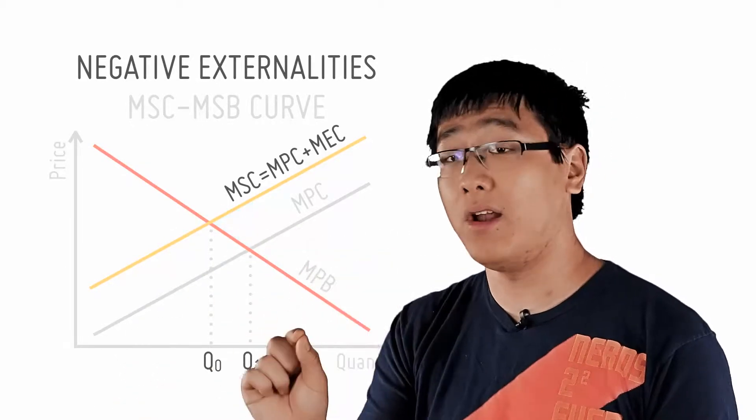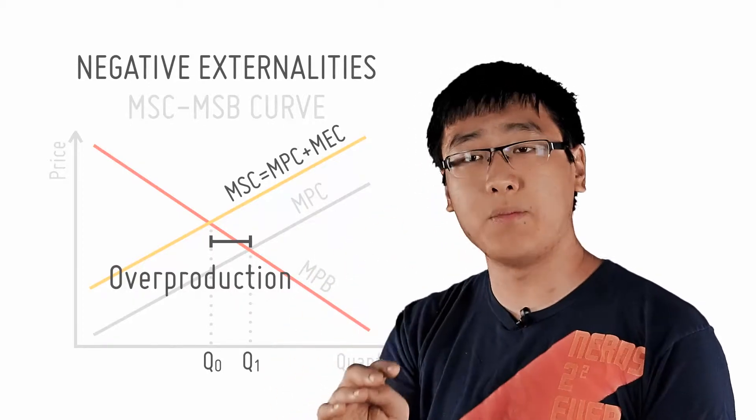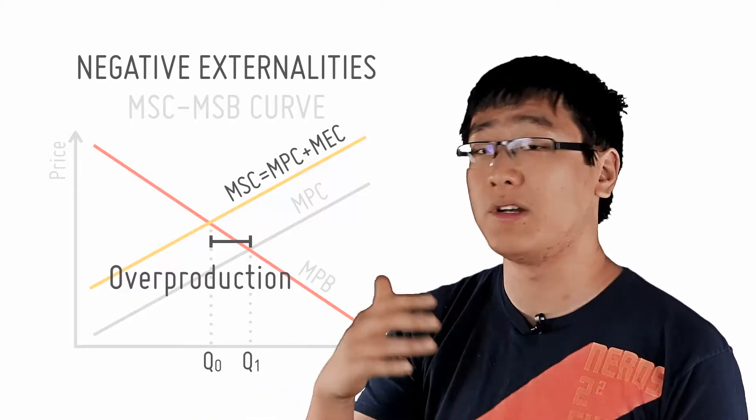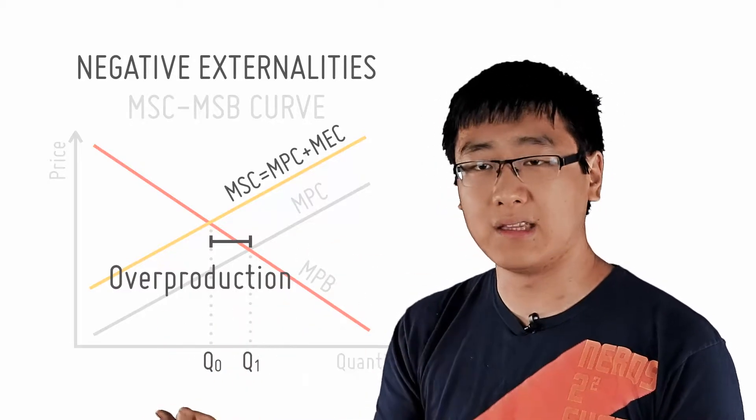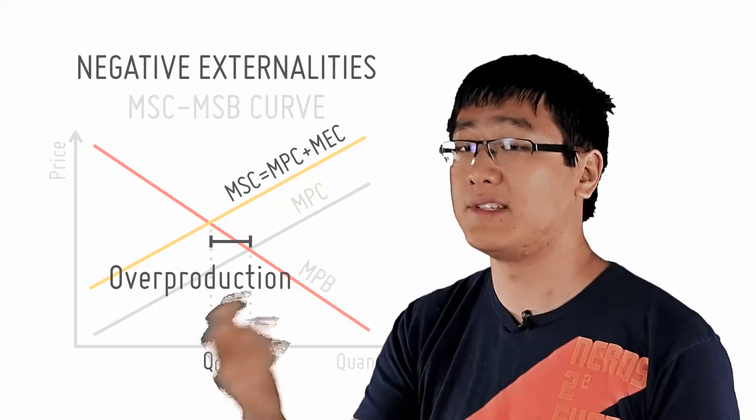Remember what causes this deadweight loss is due to overproduction. So again, the socially optimal point should be Q0 where MSB equals MSC. However, when the market produces at Q1 without any intervention, it is overproducing, and it is what will happen if it leaves the market to itself.